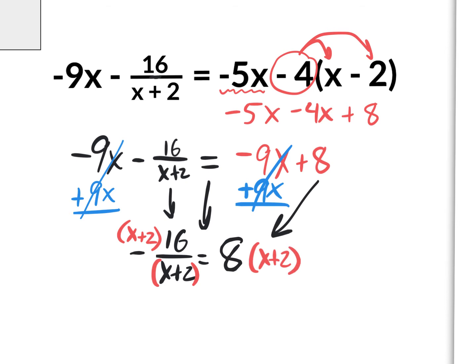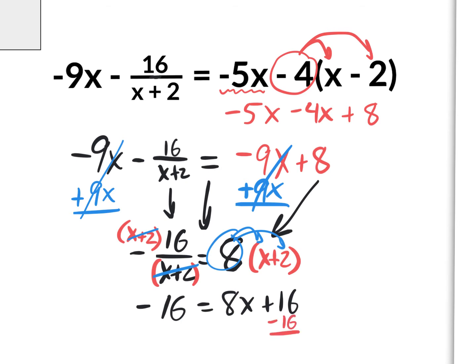What you do to one side, you must do to the other. When you have something divided by that exact thing, it cancels out — just like 3 divided by 3 is 1, x plus 2 divided by x plus 2 is 1. That completely eliminates the fraction. On the left I have negative 16. On the right I need to distribute: 8 times x is 8x, and 8 times 2 is 16. So I almost have x by itself. Now I'll subtract 16 from both sides to get rid of the constant.